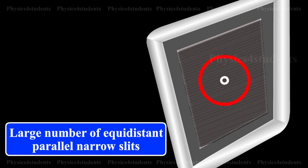Diffraction Grating. An arrangement consisting of a large number of equidistant parallel narrow slits of equal width separated by equal opaque portions is known as a diffraction grating.